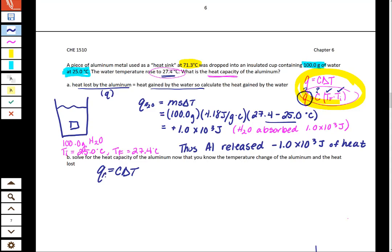The Q for the aluminum is negative 1.0 times 10 to the third joules. We're solving for C and we have delta T. So delta T is T final minus T initial.